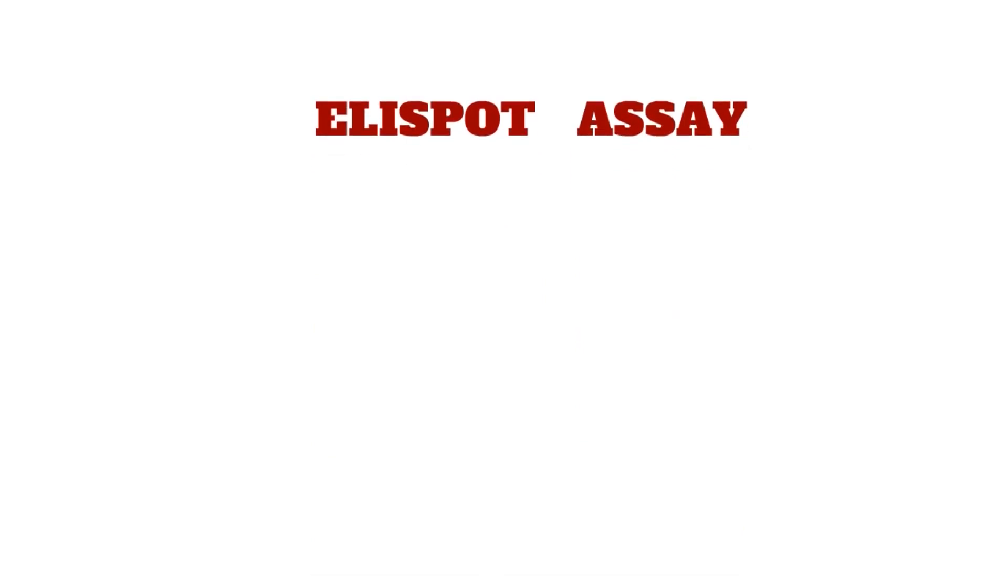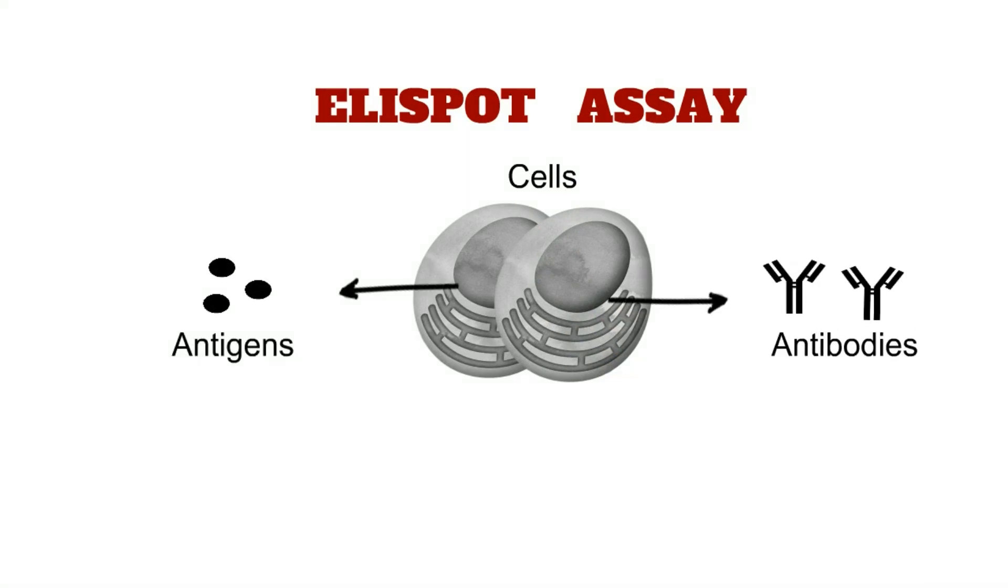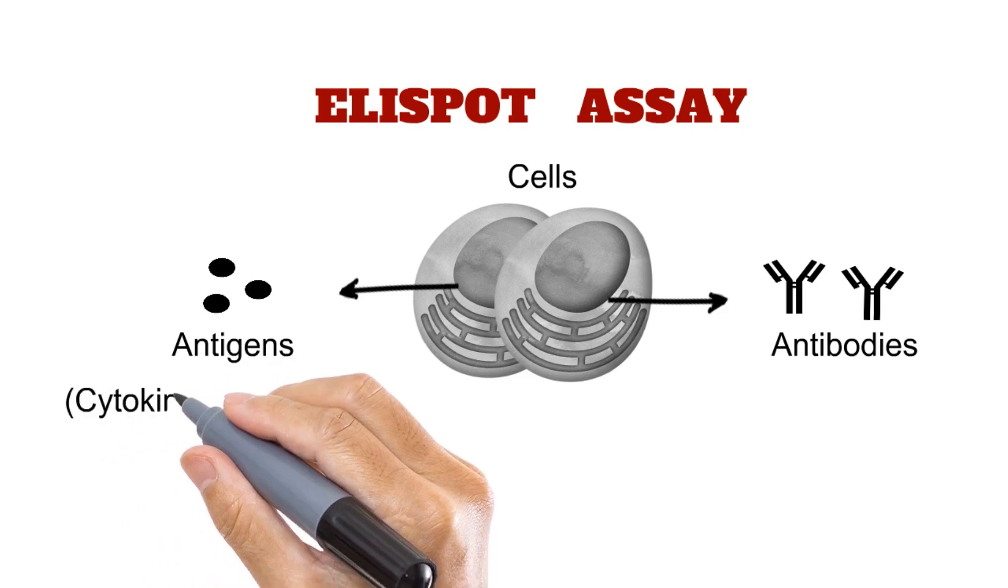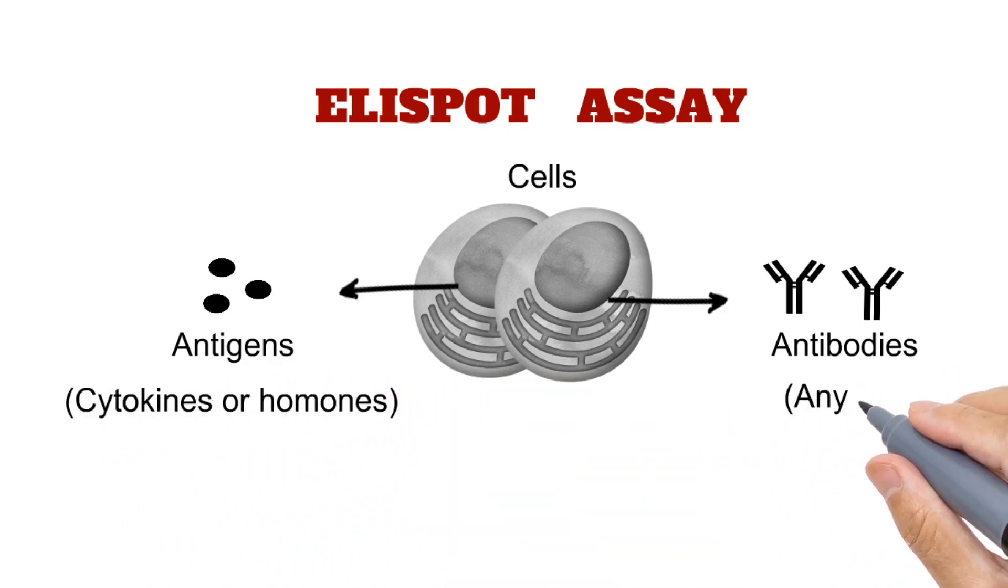As I told, ELISPOT assay is used to detect and quantify the cells that produce either specific antigen or antibodies. Antigens produced by these cells can be any molecule like cytokine or hormone and antibodies can be of any type.